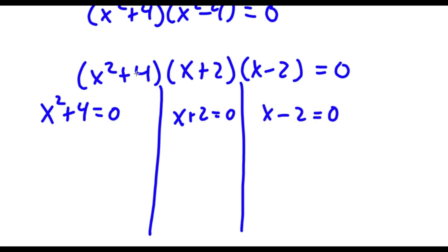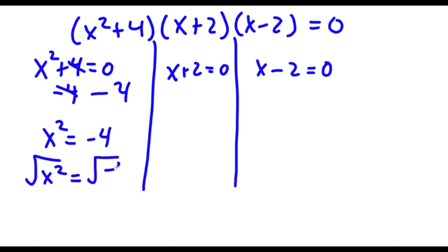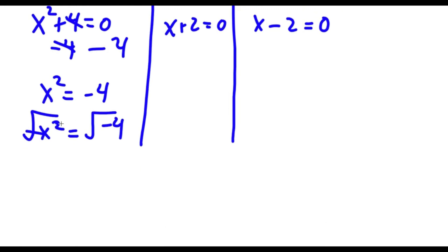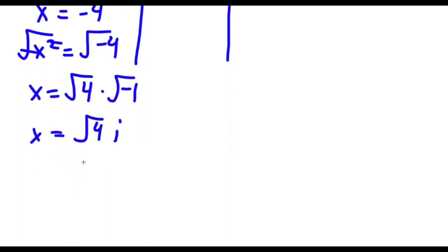For x squared plus 4 equals 0, I subtract 4 from both sides to get x squared equals negative 4. Taking the square root of both sides gives x equals the square root of negative 4, which is the square root of 4 times the square root of negative 1. Since the square root of negative 1 equals i, and the square root of 4 is plus or minus 2, I get x equals positive or negative 2i.